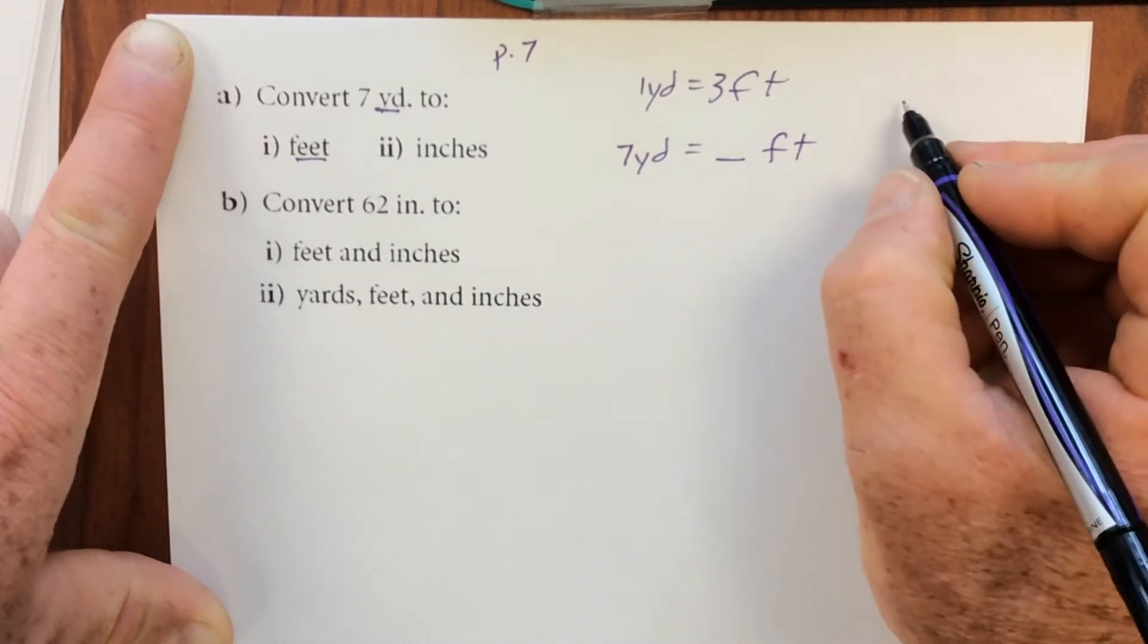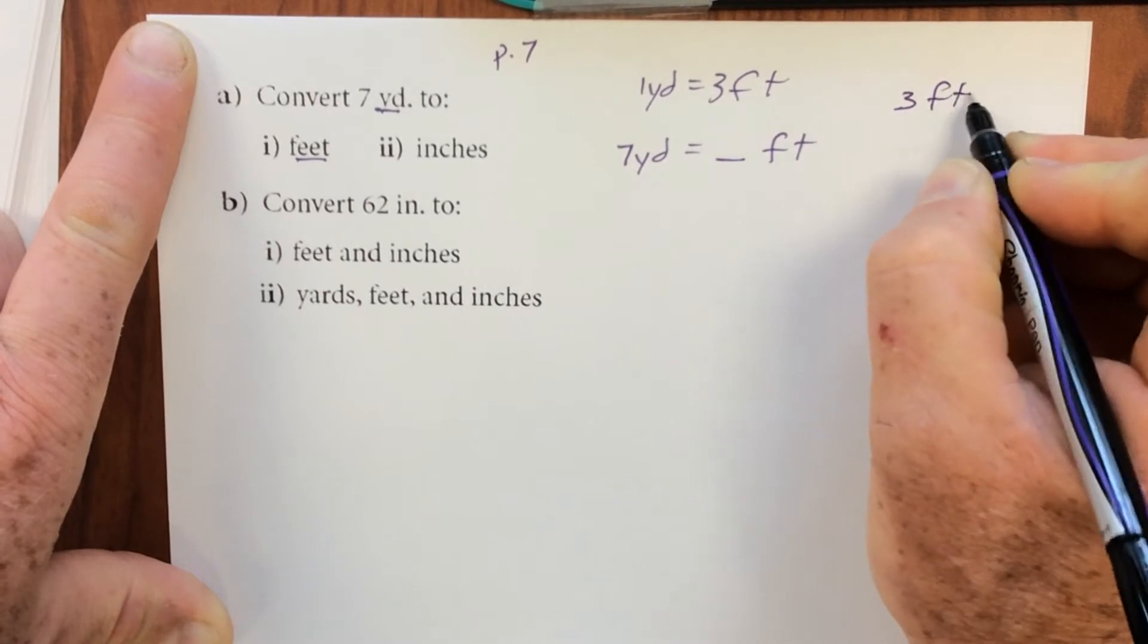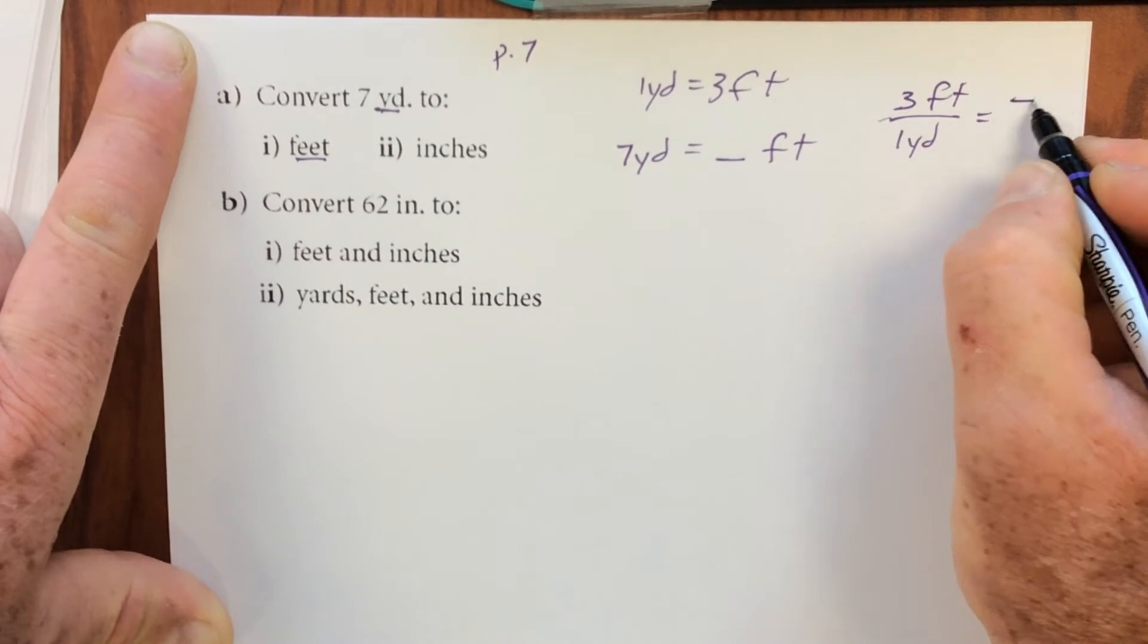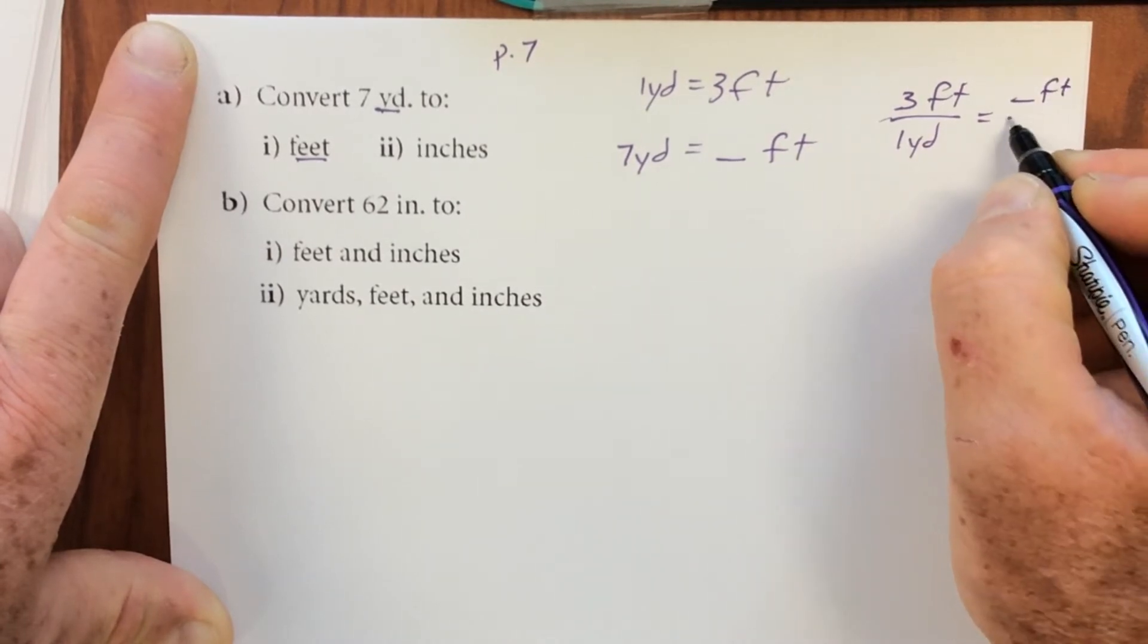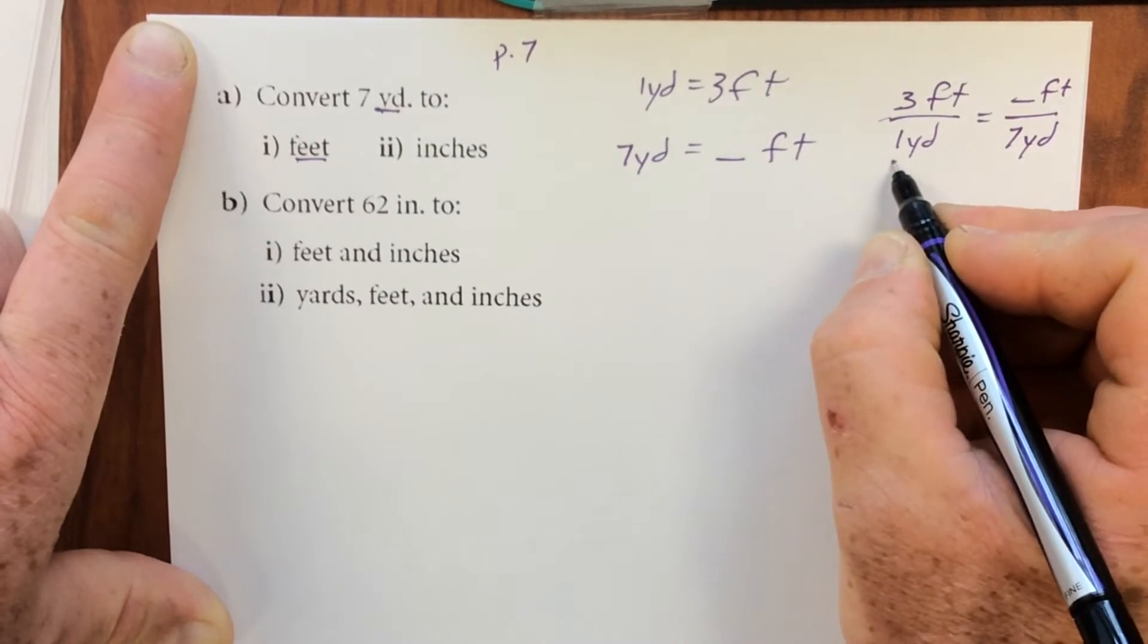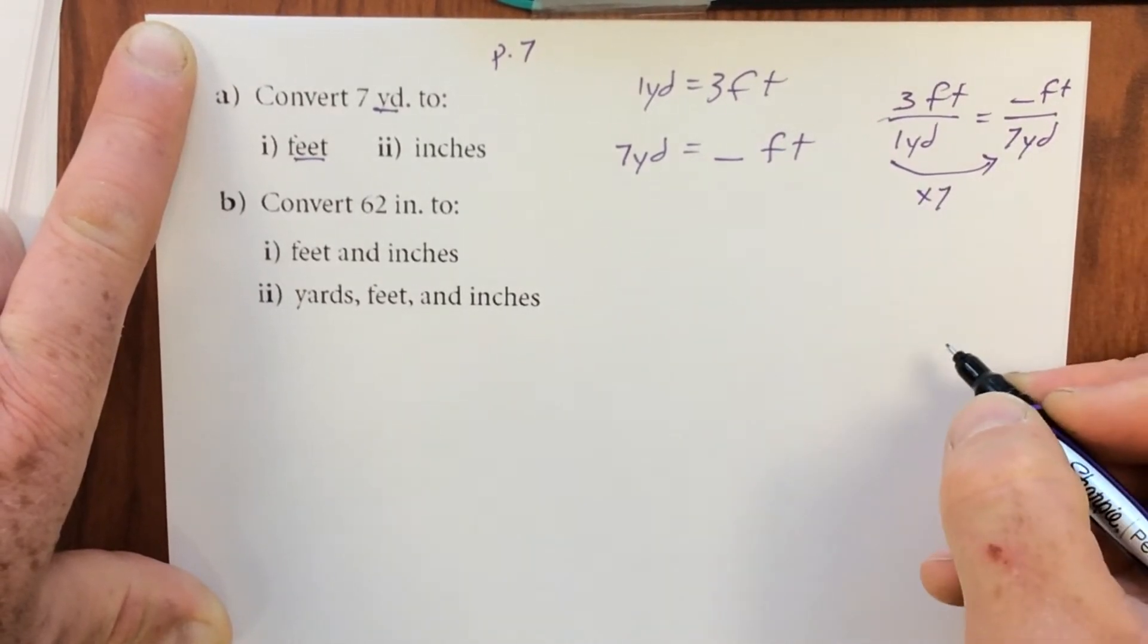Personally, I would set this up as a fraction. Three feet is one yard. So how many feet in seven yards? If I take one, I multiply it by seven to get seven yards.